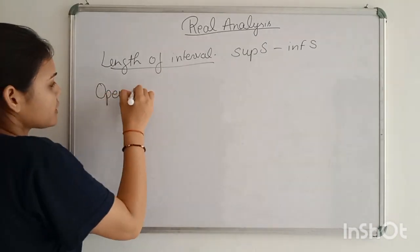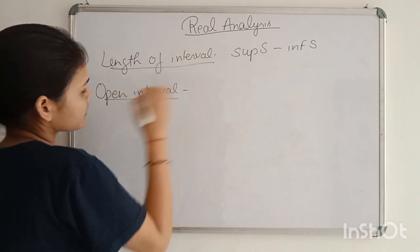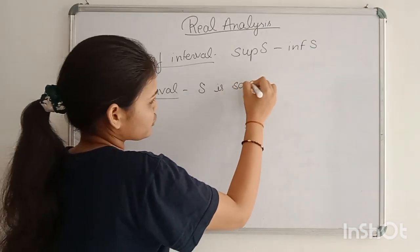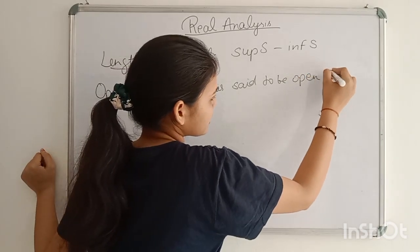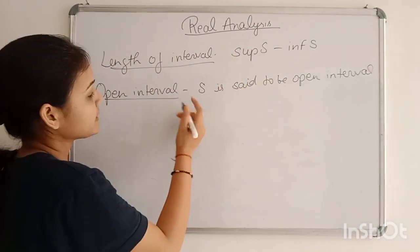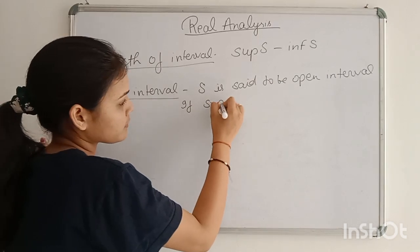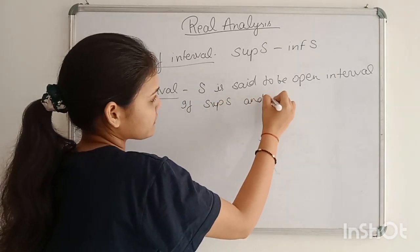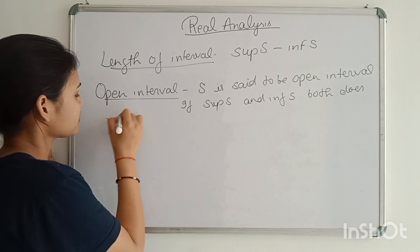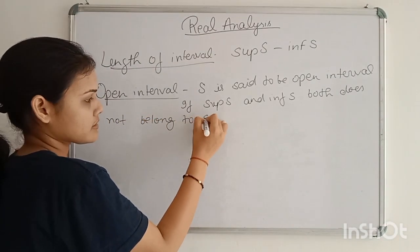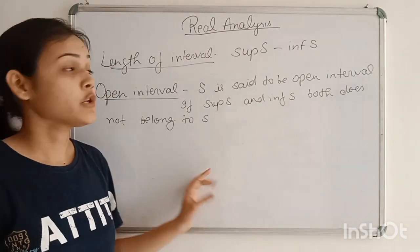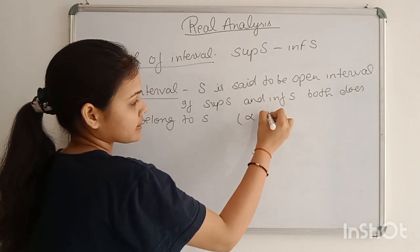Now what is open interval? S is said to be open interval if supremum of S and infimum of S do not belong to S. When S's supremum and infimum don't belong to S, it's an open interval. And we denote it this way.